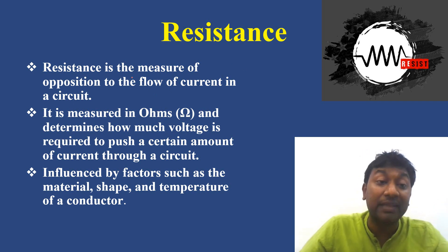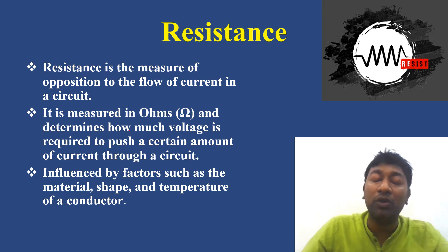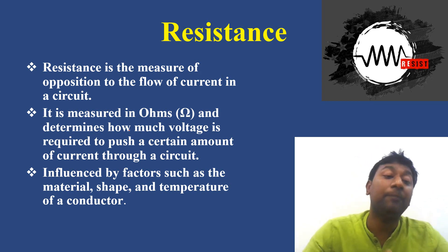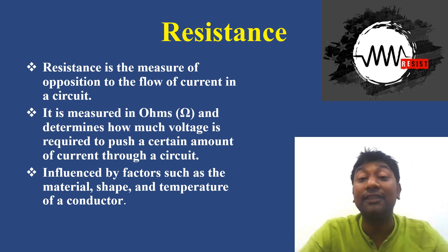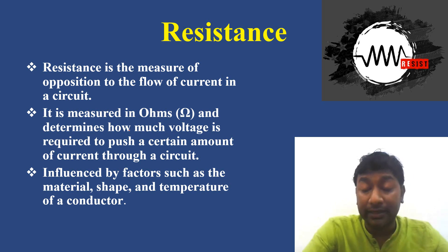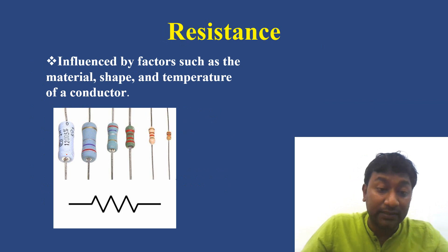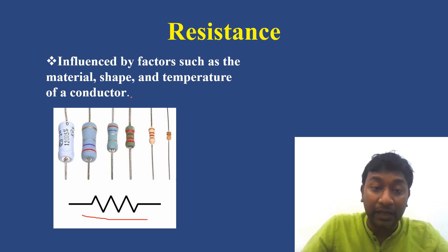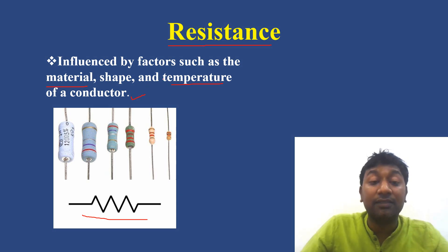Resistance is the measure of opposition to the flow of current in a circuit. It is measured in ohms and determines how much voltage is required to push a certain amount of current. It is influenced by factors such as the material, shape, and temperature of a conductor. If the temperature changes, the resistance value changes; if the material changes, resistance changes; and if the shape changes, resistance also changes.